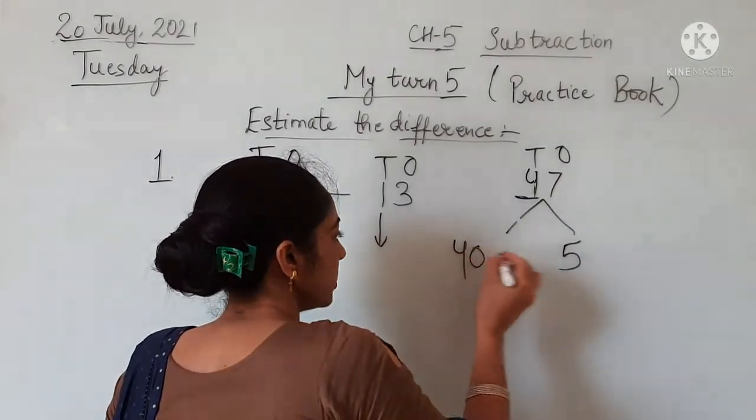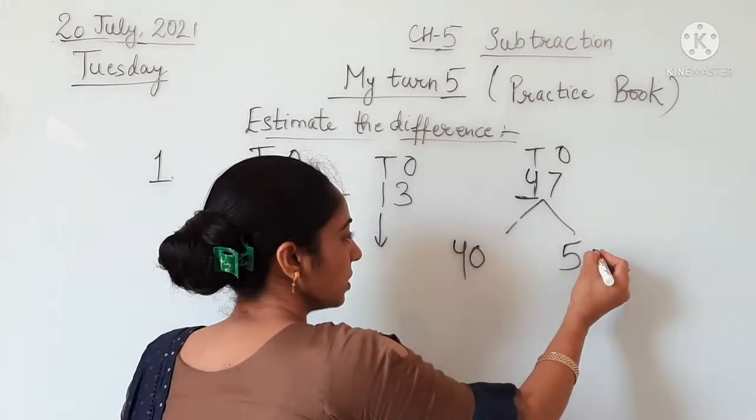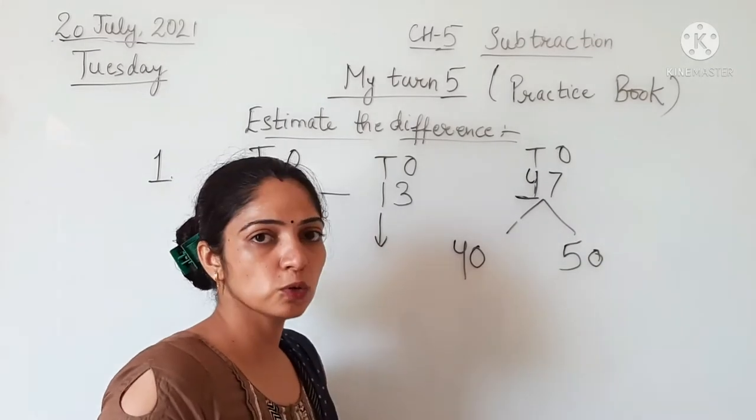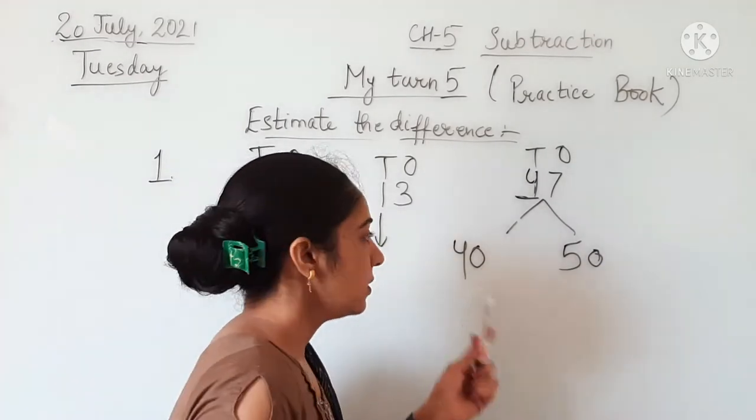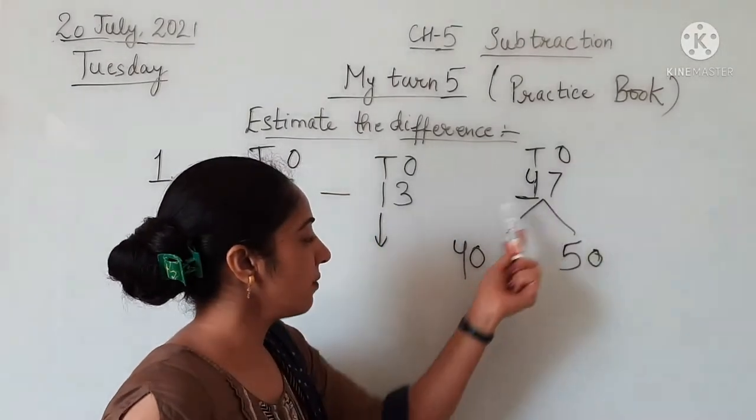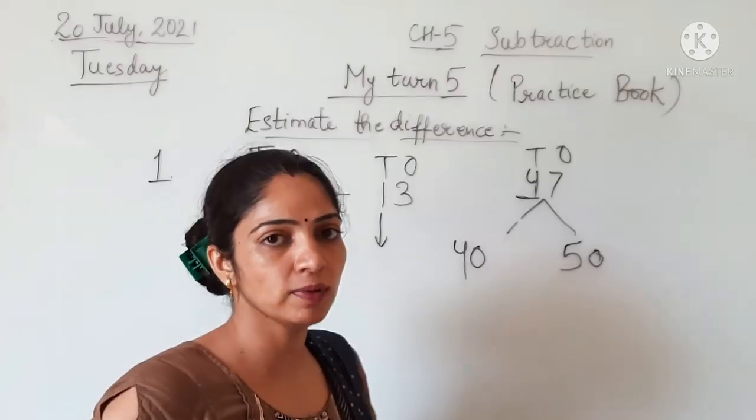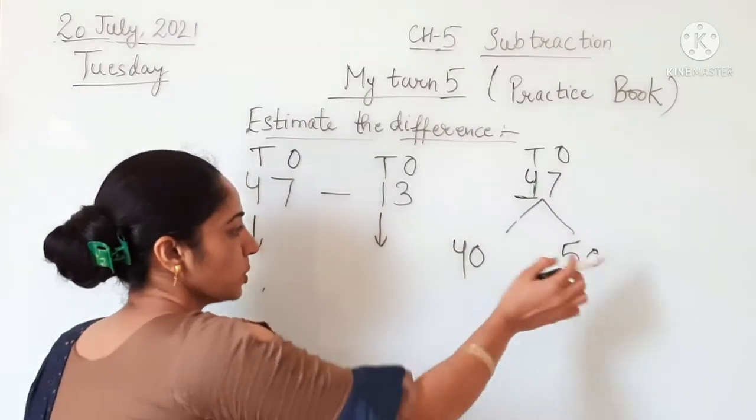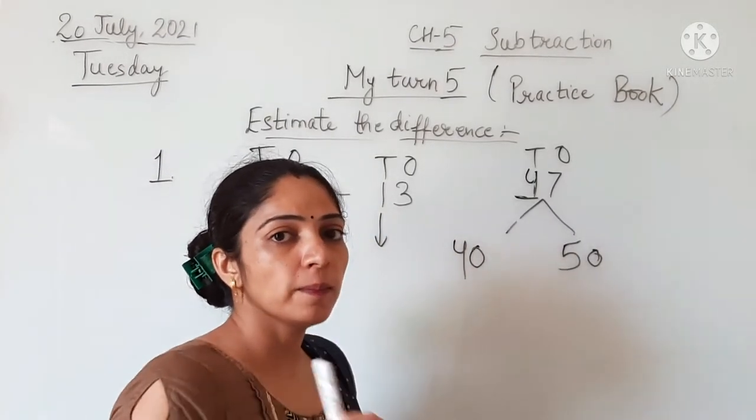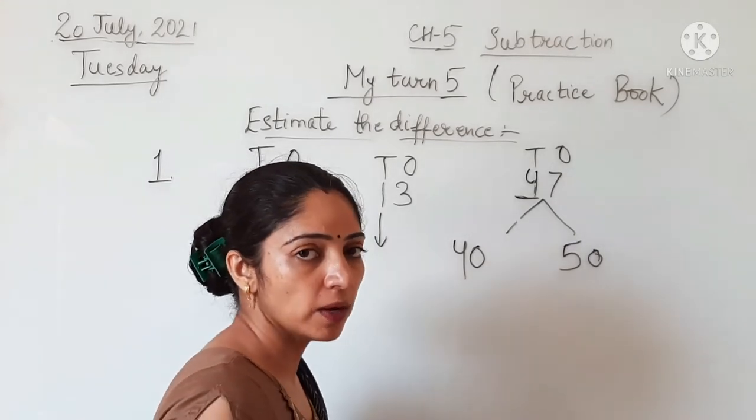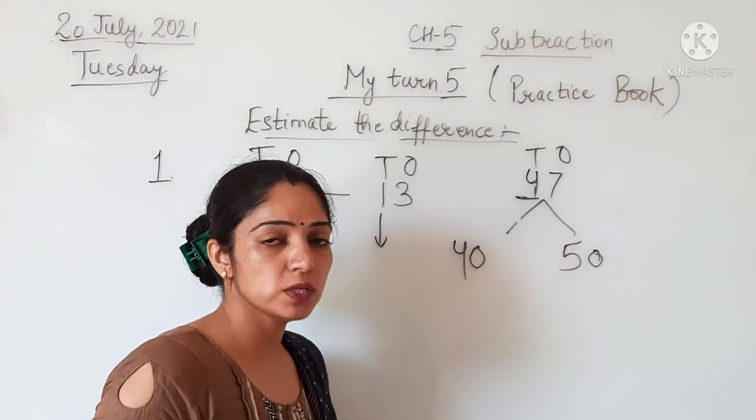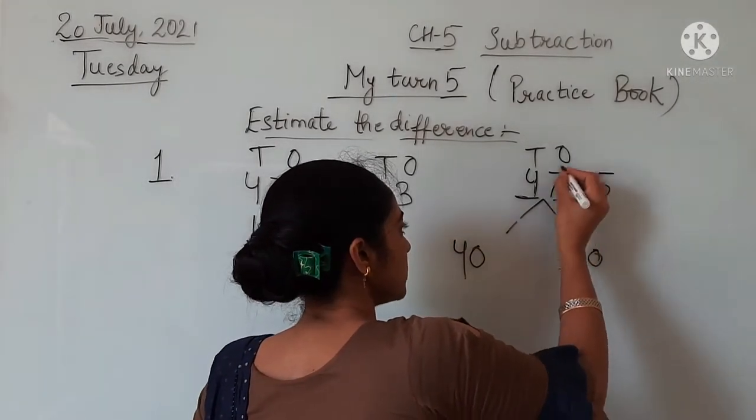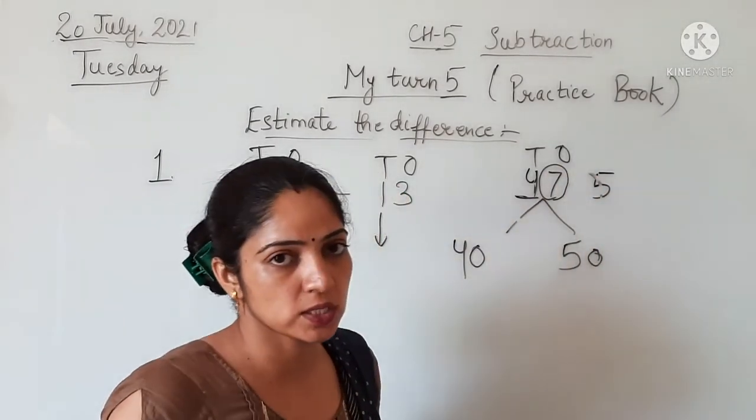One number we have, so we put ones and tens. It means that 47 lies between 40 and 50. Now we compare the digit - which digit we need to compare with 5? The ones place digit. We compare the ones place digit with 5.